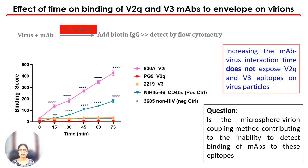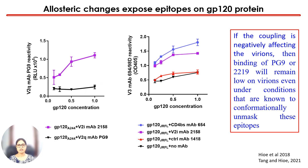We tested binding of select antibodies at different time points from 0 to 75 minutes in 15-minute increments. PG9 and the 2219 antibody did not show any binding to REGO virus at any of the time points tested, indicating that the epitopes of these antibodies remain occluded on the virus even after 75 minutes of incubation. We then wondered if the microsphere-virion coupling method was preventing particles from exposing these epitopes. Studies using GP120 proteins have shown that binding of select antibodies can expose the V2Q antibody PG9 epitopes.